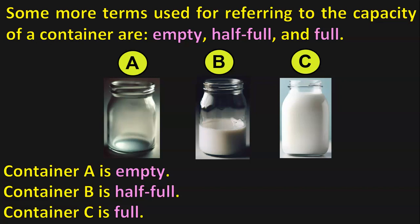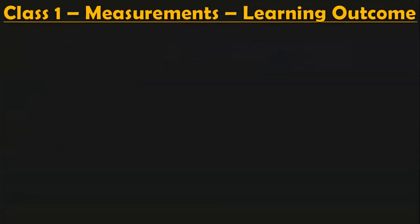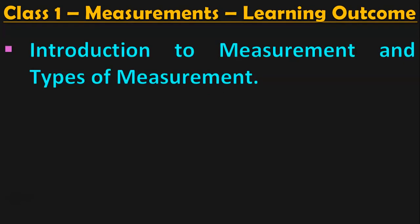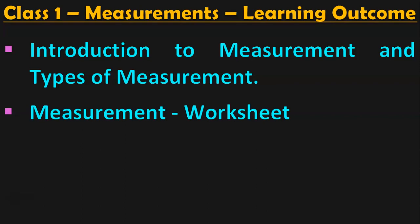With that we complete the topic measurements for class 1. Some of the learning outcomes in class 1 under the topic measurements are introduction to measurement and types of measurement, and next is the measurement worksheet. I have completed the topic introduction to measurement and types of measurement in this video. In the next video I will be doing a measurement worksheet. Once children are thorough with the types of measurement, it will be very easy for them to do the activities in the measurement worksheet video.